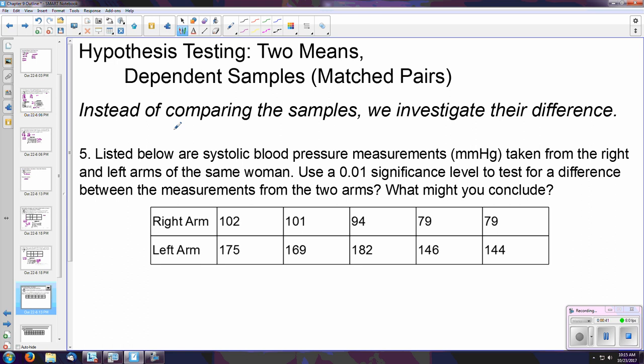Listed below are systolic blood pressure measurements in millimeters of mercury taken from the right and left arms of the same woman. Using a 0.01 significance level to test for a difference between the measurements of the two arms, what might you conclude? Well, for starters, because they specified these are coming from the same person, it doesn't matter—same person, you should end up with the same measurement in each arm.